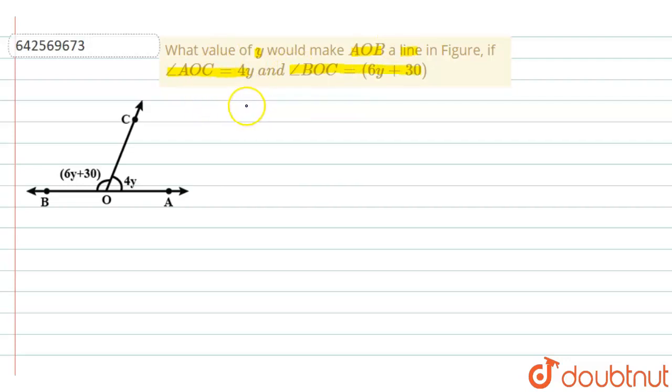So from the diagram, if angle AOB is a line, this implies angle AOB should be equal to 180 degrees.